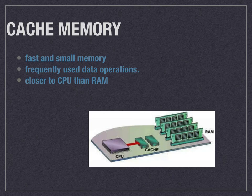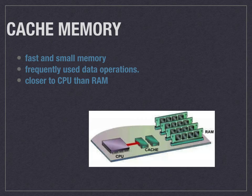Cache memory is a fast and small memory — it doesn't have a huge memory space. It stores frequently used data and operations. Another important thing is that cache memory is more closer to the CPU than RAM, which improves the memory access time.